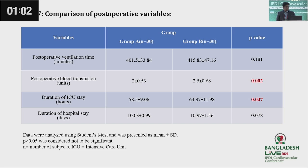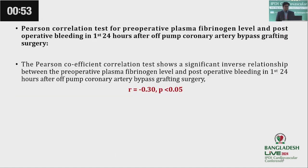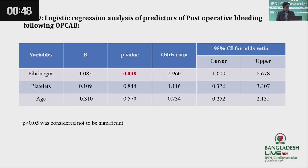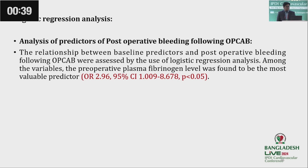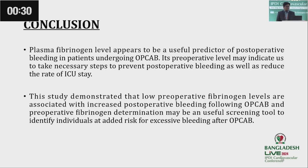However, the duration of hospital stay did not show a statistically significant difference between the two groups. Correlation testing found a significant inverse correlation between preoperative plasma fibrinogen level and postoperative bleeding. As platelet count and age were also found significant, multivariate logistic regression analysis was performed, which confirmed that preoperative plasma fibrinogen level was the most valuable predictor. There were no postoperative thromboembolic events, cardiac ischemic events, re-exploration, or mortality in the present study.